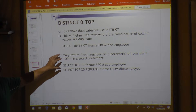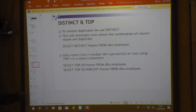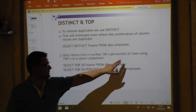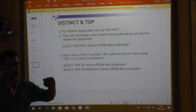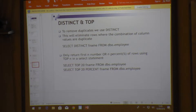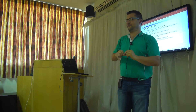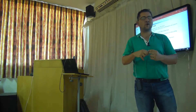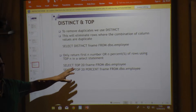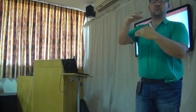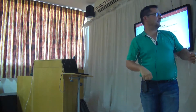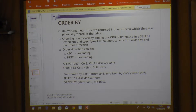We can also tell the query to retrieve a specific number or percentage of rows using TOP. Note that you cannot just put the percentage sign — you need to write out the word PERCENT. TOP 20 and TOP 20 PERCENT are not always the same: if you have a thousand rows, TOP 20 returns 20 rows, while TOP 20 PERCENT returns 200 rows.